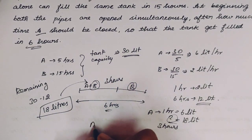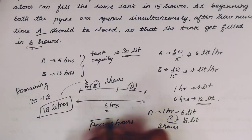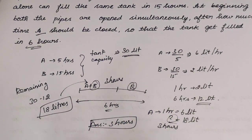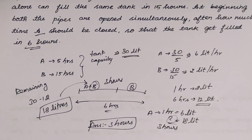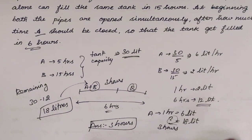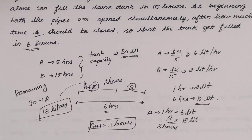Okay, clear? The first and second questions use the same method. So that's the answer — 3 hours and then pipe A is closed. Now the next, 3rd question.